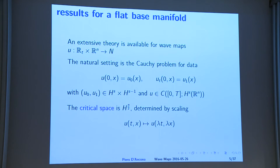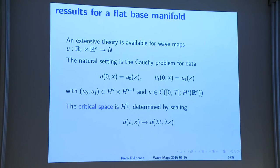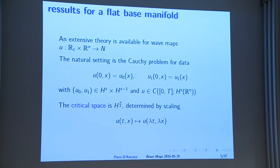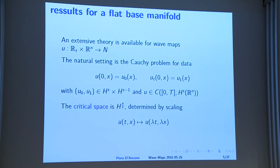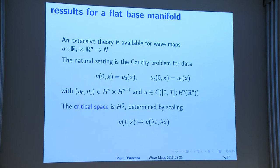When the base manifold is flat, you have a lot of results now and some parts of the theory are really well understood. There are some corner cases still under intense study, especially the two-dimensional case. The natural setting is the Cauchy problem with initial data. The function lies in H^s, the usual scale of Sobolev spaces, and you look for functions which are continuous in H^s and C^1 in H^{s-1}.